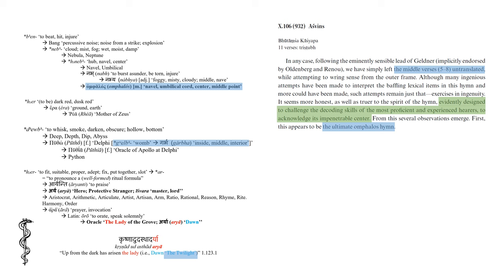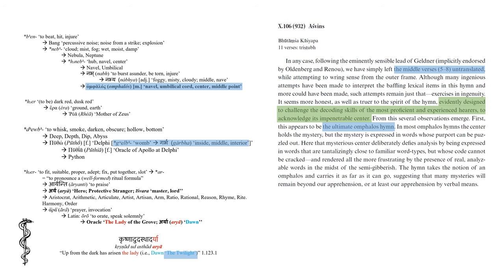And returning to the hymn, Jameson and Brereton write: In most omphalos hymns, the center holds the mystery, but the mystery is expressed in words, whose purport can be puzzled out. Here, that mysterious center deliberately defies analysis by being expressed in words that are tantalizingly close to familiar word types, but whose code cannot be cracked. The hymn takes the notion of an omphalos and carries it as far as it can go, suggesting that many mysteries will remain beyond our apprehension, or at least our apprehension by verbal means.